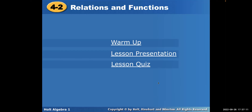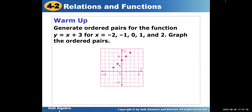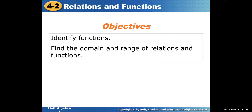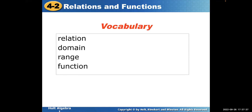Here's what we're doing today. This presentation has a warm-up where you're basically just plotting points and getting the points accurate. Our objective today is students will identify functions, and students will find the domain and range of relations and functions. The four vocabulary words are relation, domain, range, and function.